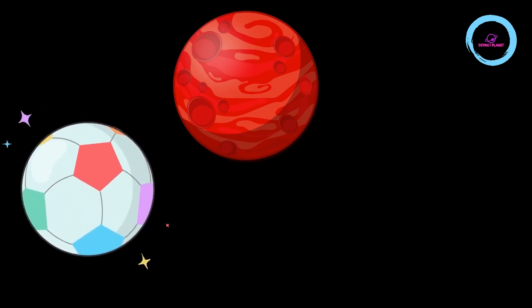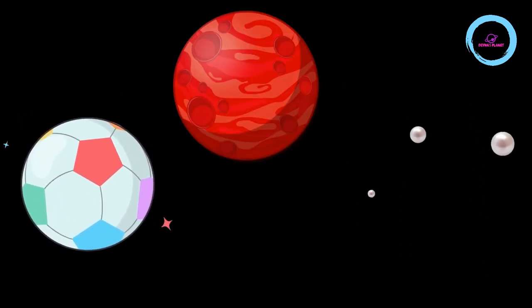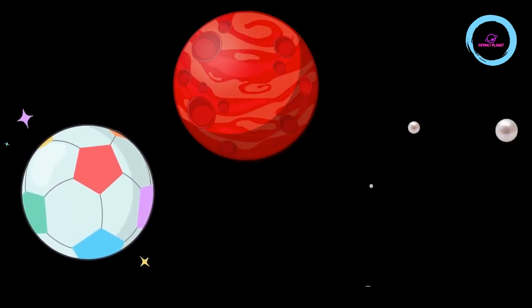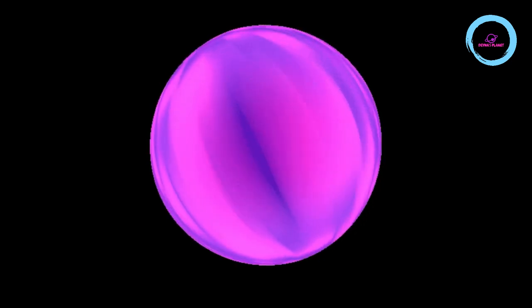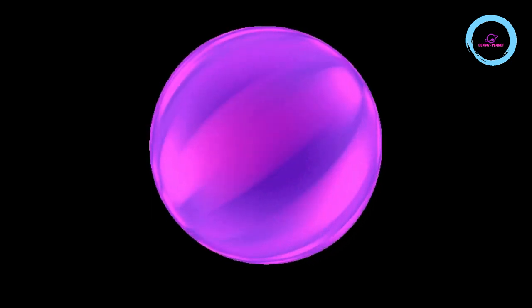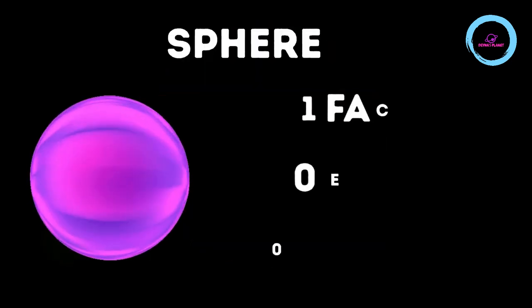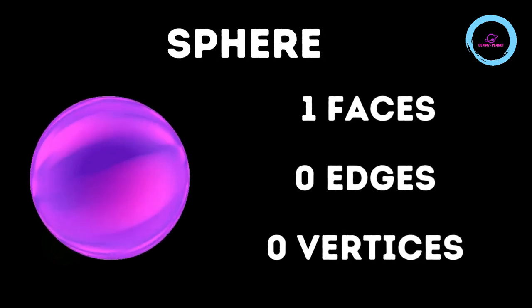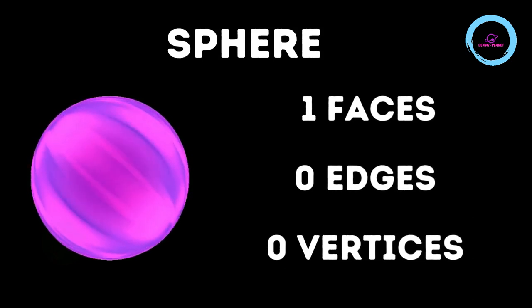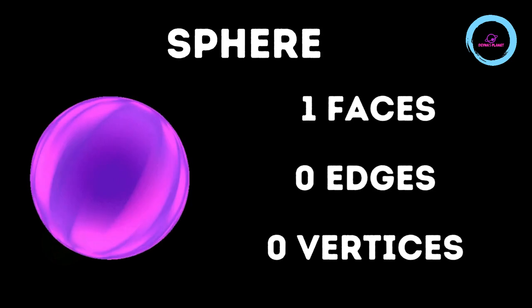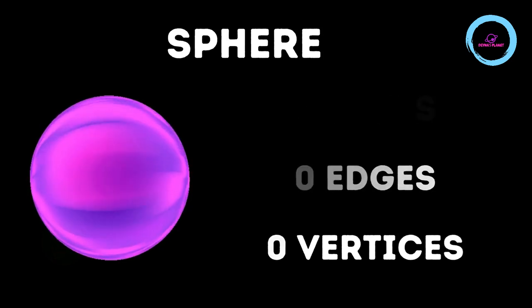This is a ball. This is the planet Mars. These are bubbles. So let's guess what these things have in common. Yes, they are all spears. A spear has one face, zero edge and zero vortices.